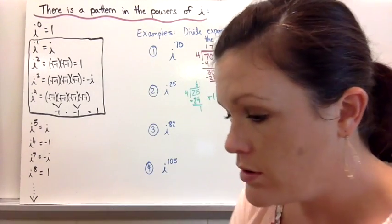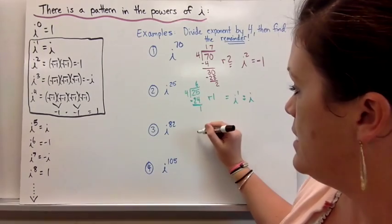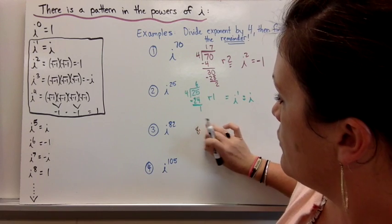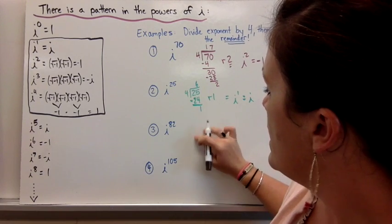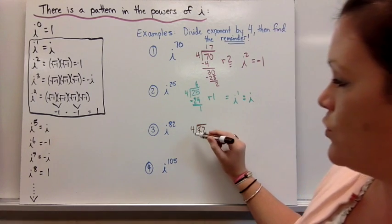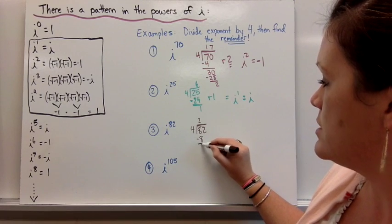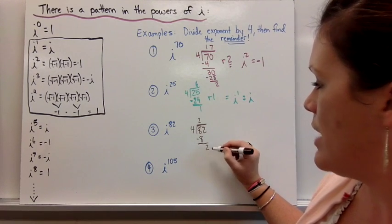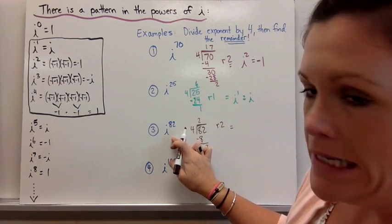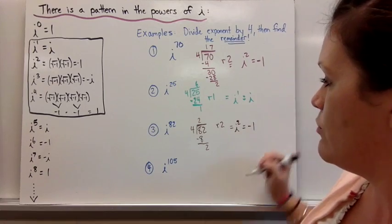Let's do another one. If we have i to the 82nd power, it's going to equal something smaller. We divide by 4: 4 divides into 8 two times; 2 times 4 is 8; subtract and we have a remainder of 2. So i to the 82nd power is equivalent to i squared, which is equivalent to negative 1. So we have simplified it.